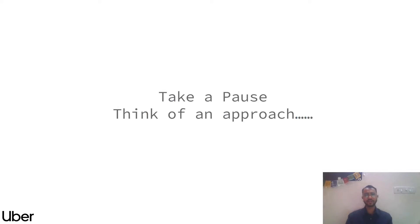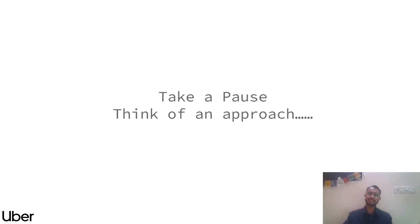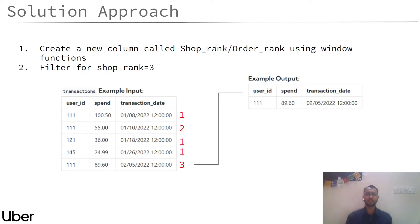I would like you to pause the video and try to think of an approach. Whenever you come across problems where they have asked you to calculate the third transaction, the last transaction, the first transaction, or the average of the last three transactions — wherever you get this sort of problem statement — you need to think in terms of window functions, specifically creating a rank column, which will be the first step of this problem.